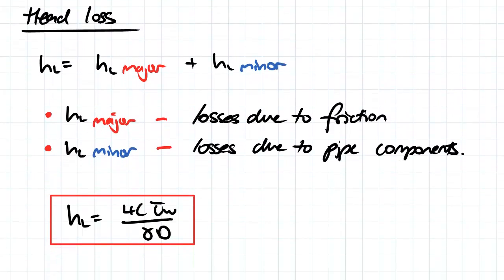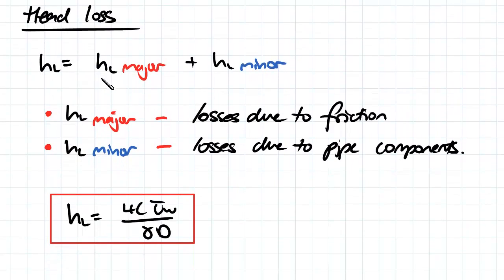So head loss. Head loss is equal to the summation of our major head losses and our minor head losses. Major head losses are losses that are due to friction, so our viscous effects within our fluid.